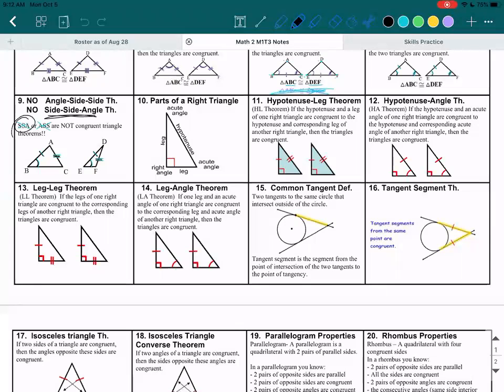Box number 10 says parts of a right triangle, and you can see there is a picture of a right triangle. A right triangle is just a triangle with a right angle, indicated by that red square on the bottom corner.